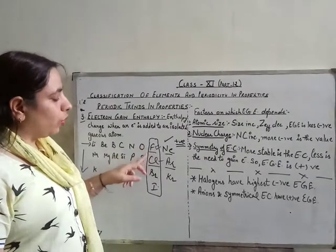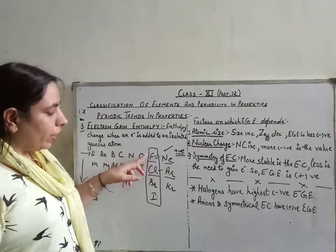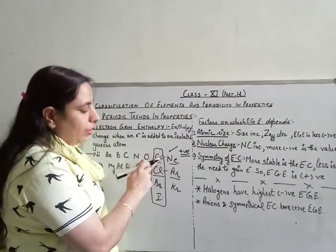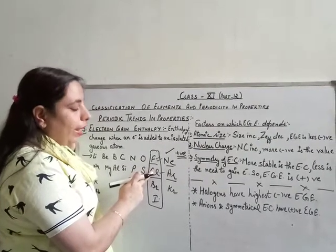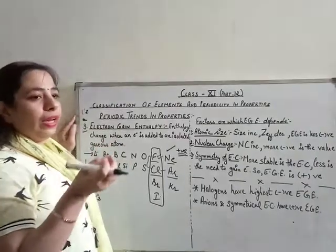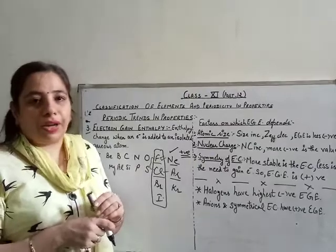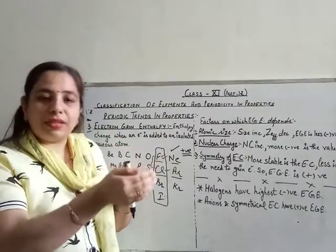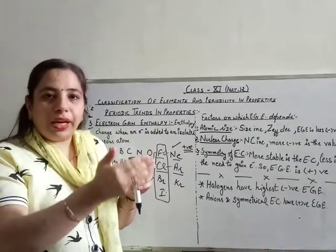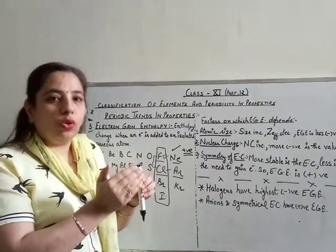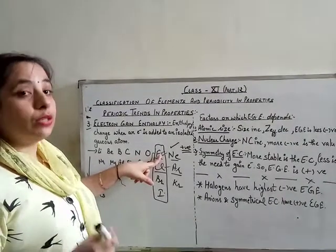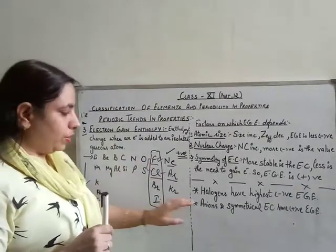Again there is an exception between fluorine and chlorine. According to our trend, fluorine's electron gain enthalpy should be most negative, but what we observe is that chlorine has a more negative value while fluorine's value is less negative or even positive. The reason is that fluorine's size is too small — the incoming electron feels more repulsion from the existing electrons than attraction from the nucleus, so it cannot be added easily and energy must be supplied.